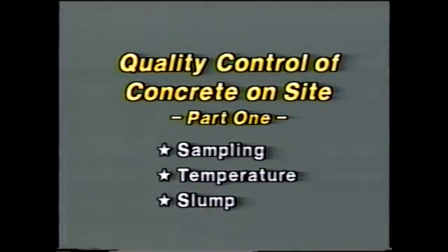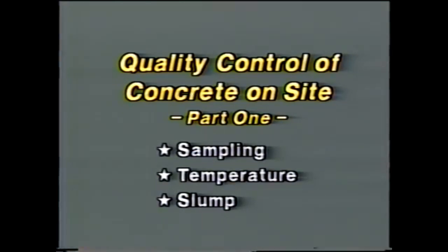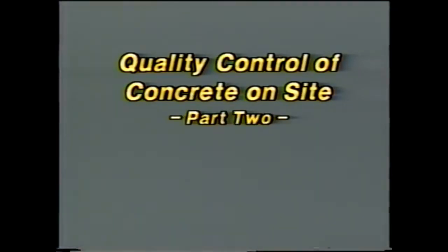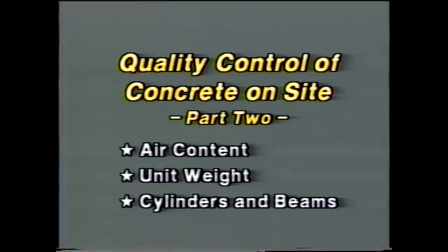And that covers sampling, temperature, and slump — the end of part one. In part two, we'll cover air content, unit weight, and the making of cylinders and beams.